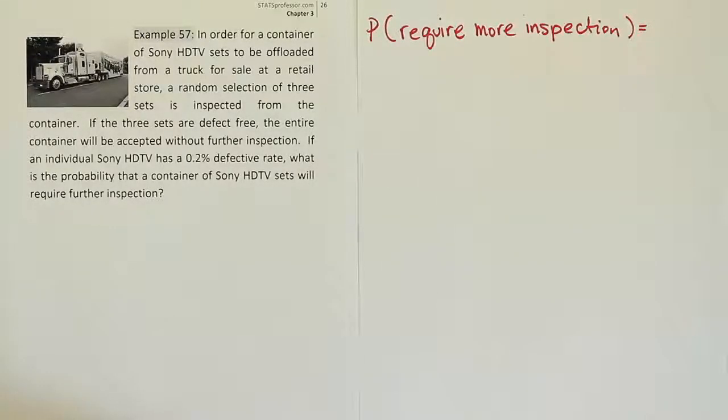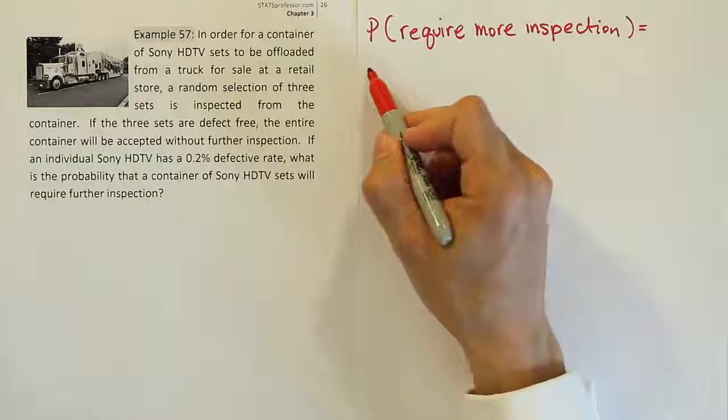If the second set is defective, that would also cause further inspection. But of course, the first could be good and the second be defective. Or they could both be. The first and the second could both be defective. The third set could be defective and the first two could be safe or good. So at this point, it seems like a pretty complicated set of ways that this could happen. Anytime that happens, you want to try to word this another way.